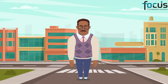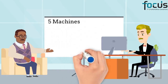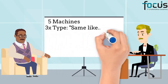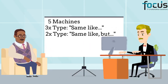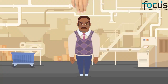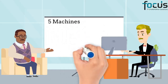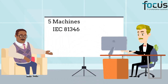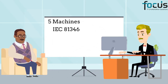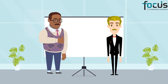A week later, customer XY comes around the corner. He would like to buy 5 machines — 3 machines of one type and 2 machines of another type. Customer XY has a large factory which he has already structured very well. Because he has his own service team, it is important to him that the 5 machines are designed according to IEC 81346, so that it's easier for the service staff to maintain them. The two agree on the deal and customer XY buys the 5 machines.